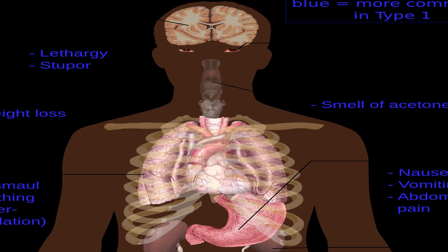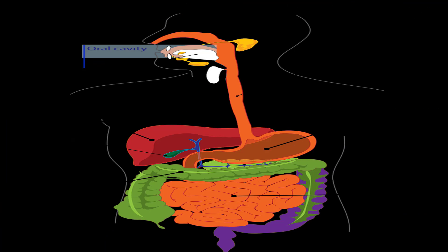Everyone can take the following steps to help prevent UTIs: drink 6 to 8 glasses of water daily, don't hold urine for long periods of time, and talk to your doctor about managing any urinary incontinence or difficulties fully emptying your bladder. However, UTIs happen much more frequently in women than in men — the ratio is 8 to 1, meaning for every 8 women who have UTIs, only one man does.